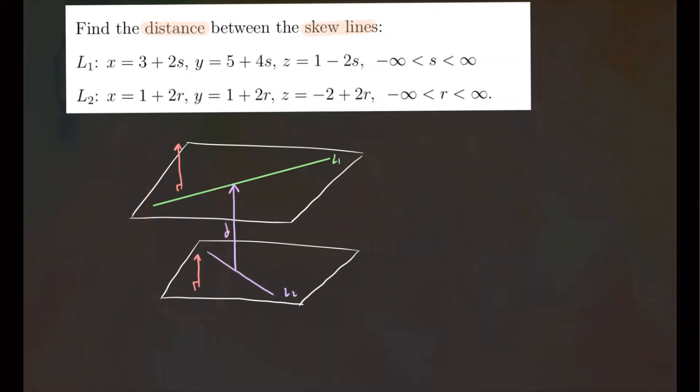Well, the first thing we're going to do is take the direction of both lines. So L1, its direction vector, let's call it V, is going to be, so these are going to be the components of our direction vector for L1. So you'll have 2, 4, negative 2. And for L2, let's find its direction. Let's call it V2. So the direction of L2 will be these coefficients in front of R. So we will have its component as 2, 2, 2.